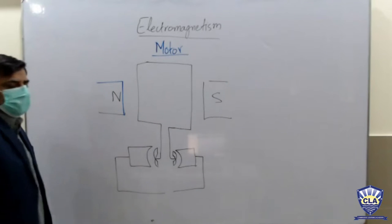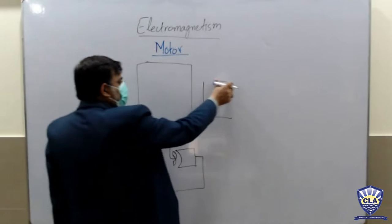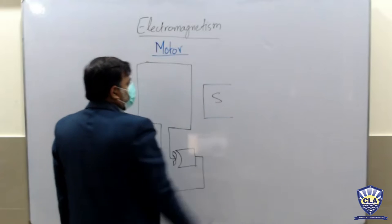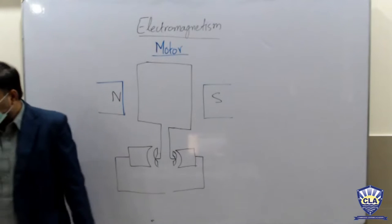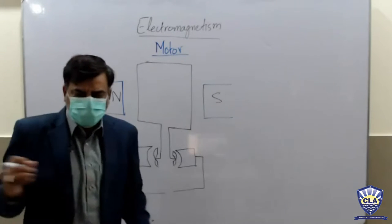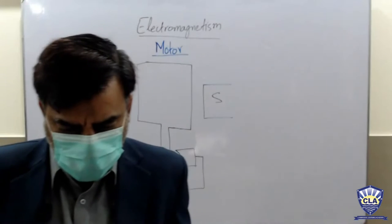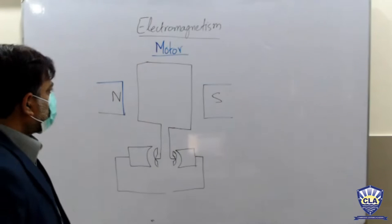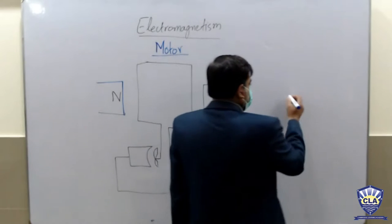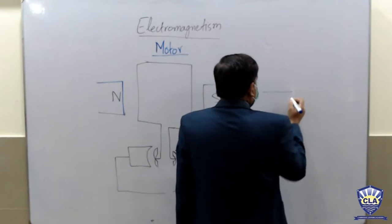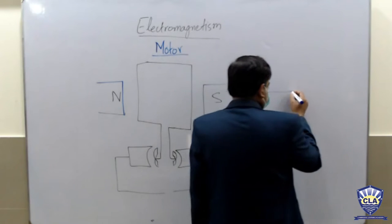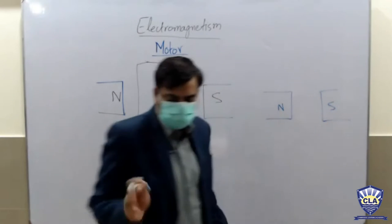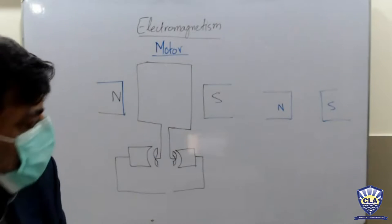For AC we need slip rings and AC current supply. Yesterday we discussed induced current — tell me, what is induced current? Induced current is when magnetic field lines hit a conducting wire or a solenoid, the current is produced because the free electrons in the conducting wire are forced to move, and the change in flux or direction of those field lines produces the current.